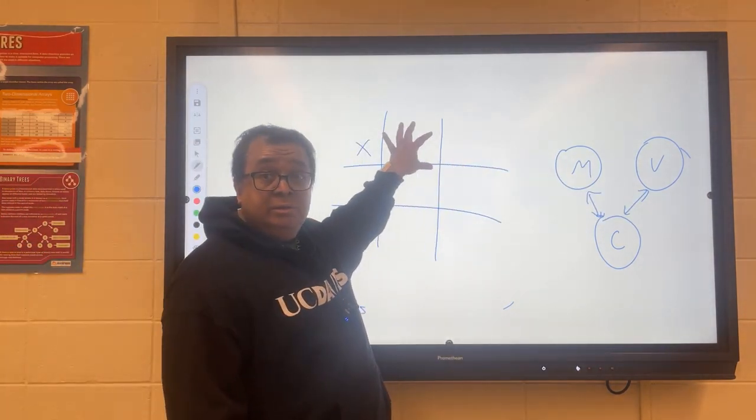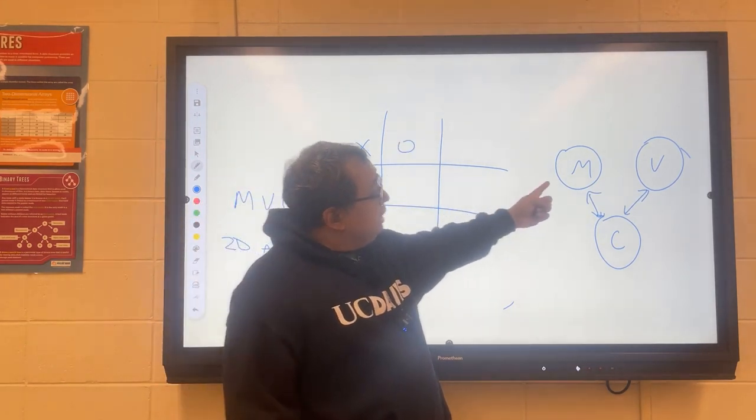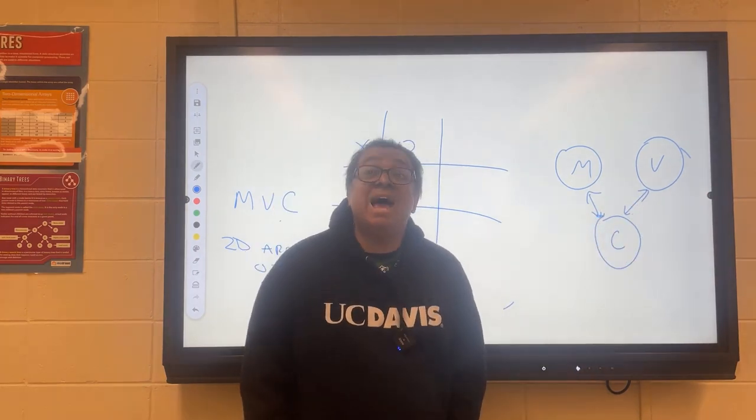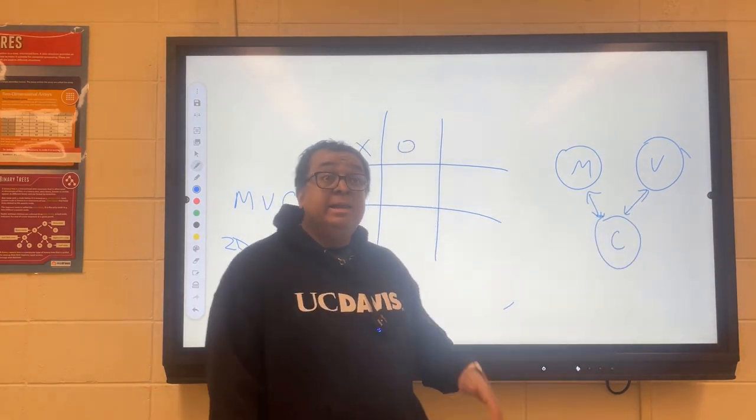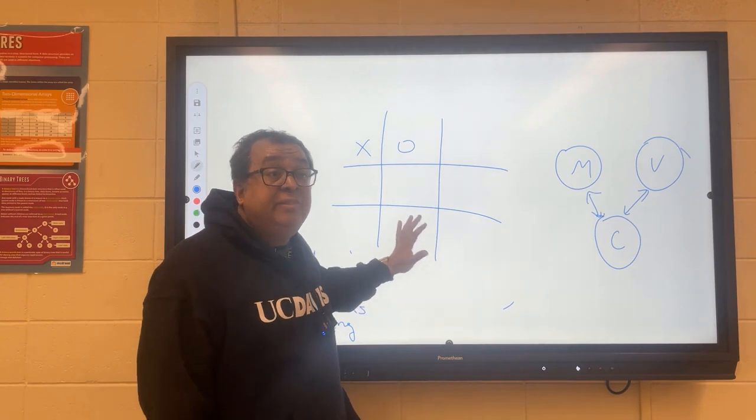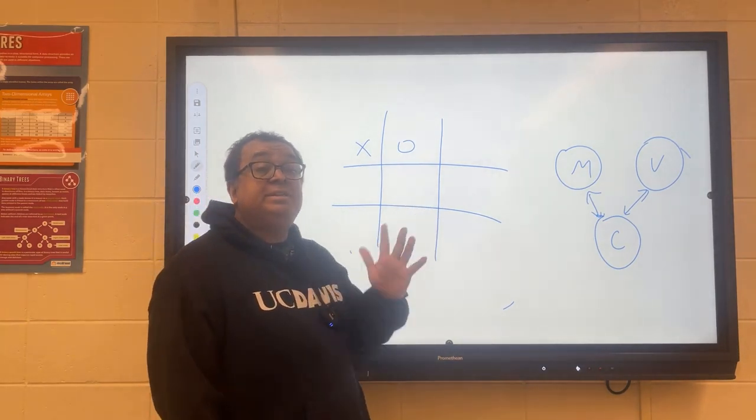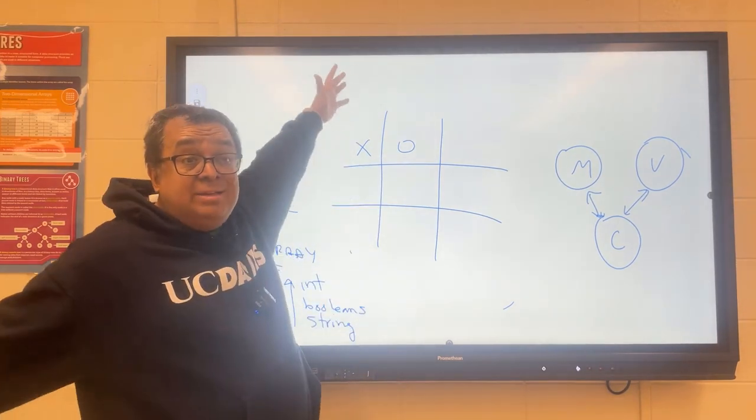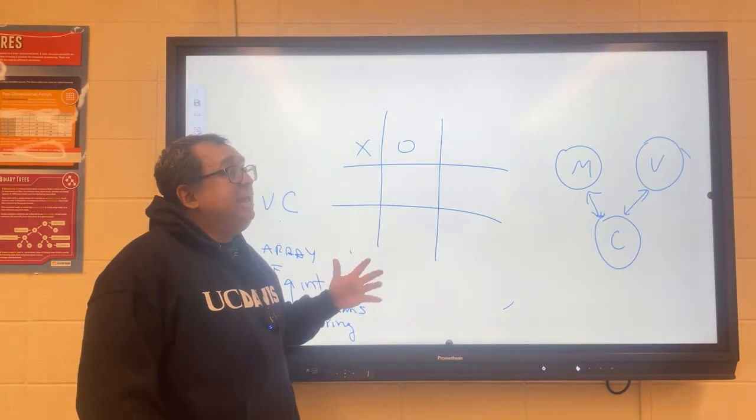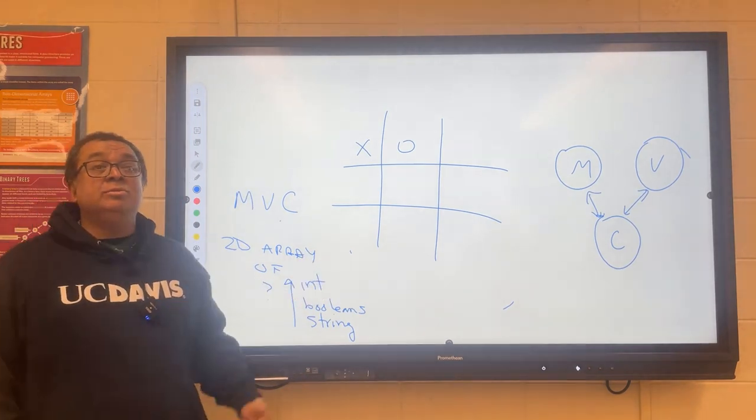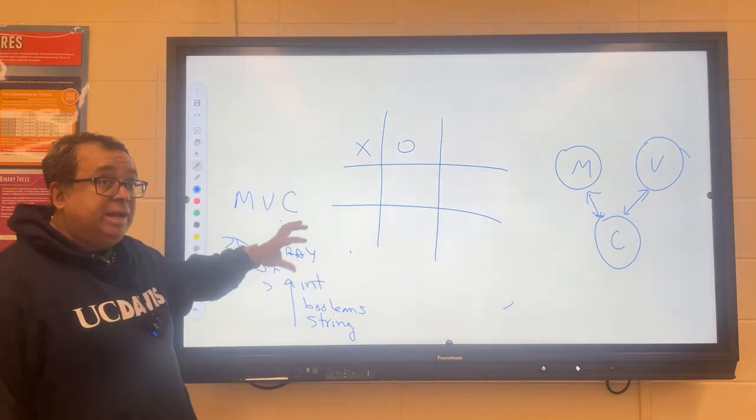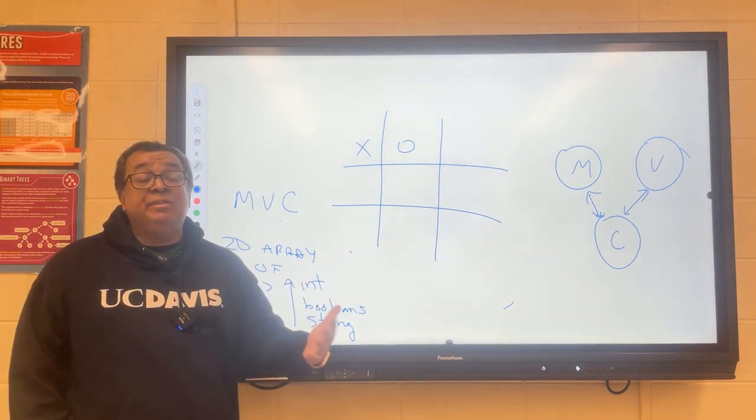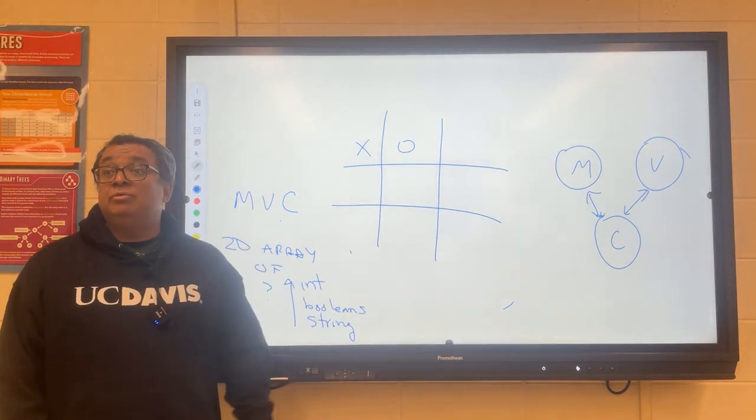Booleans? Yes. Strings? I'm going to discuss these in reverse order. Let's talk about strings first. What would be the advantage of using strings for the internal model? We're already using strings over here, so maybe we could use the same model for the view and the control. Disaster.